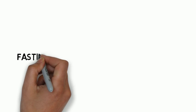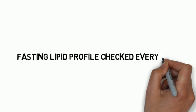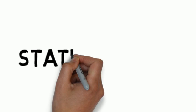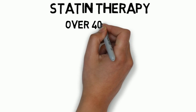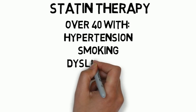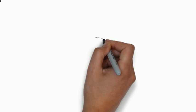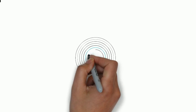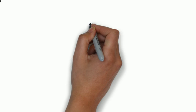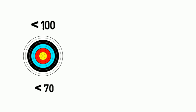Regarding cholesterol, in most patients with diabetes a fasting lipid profile should be checked every year. Diet and exercise should be recommended for all patients. All diabetic patients should be given statin therapy who have cardiovascular disease or are over 40 with a history of hypertension, smoking, dyslipidemia, albuminuria, or a family history of cardiovascular disease. The LDL target in diabetics without overt cardiovascular disease is less than 100, and in those with cardiovascular disease the goal is less than 70. Statin therapy is contraindicated in pregnancy.